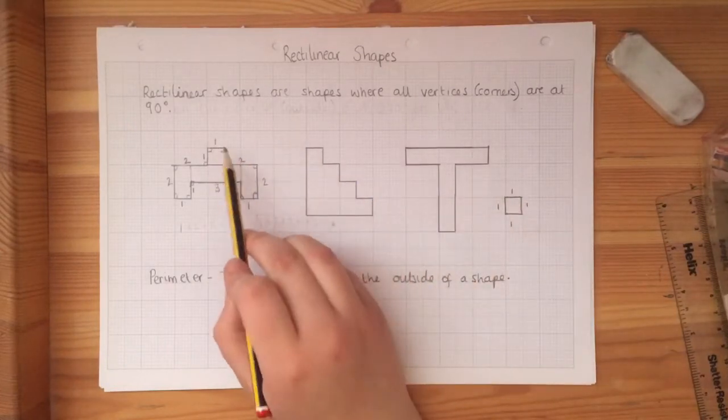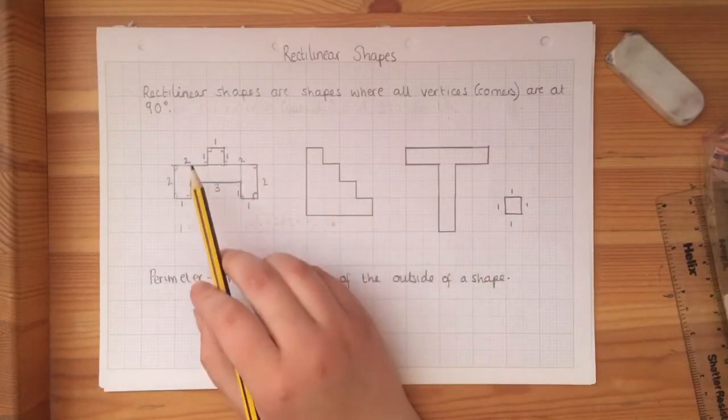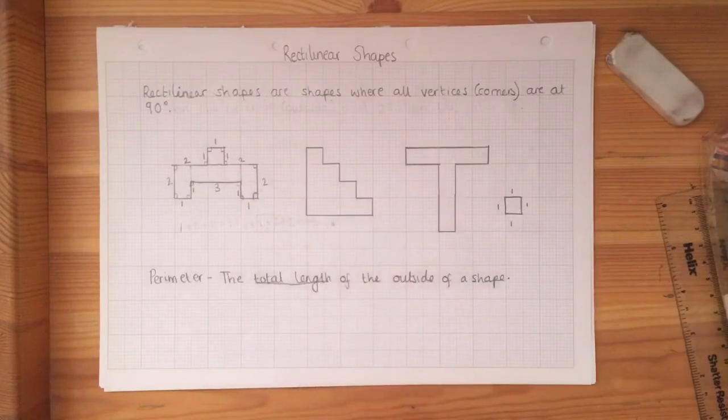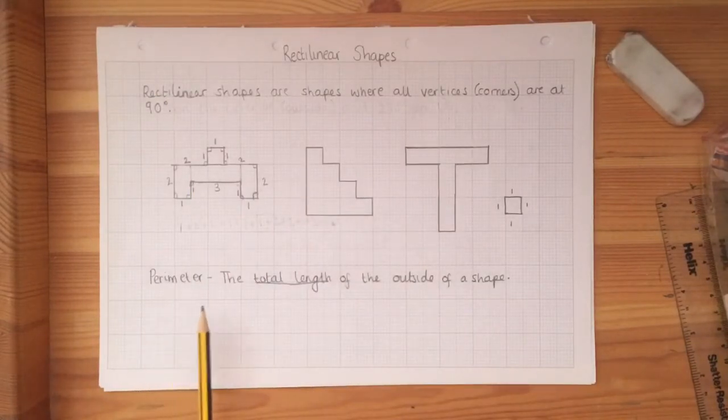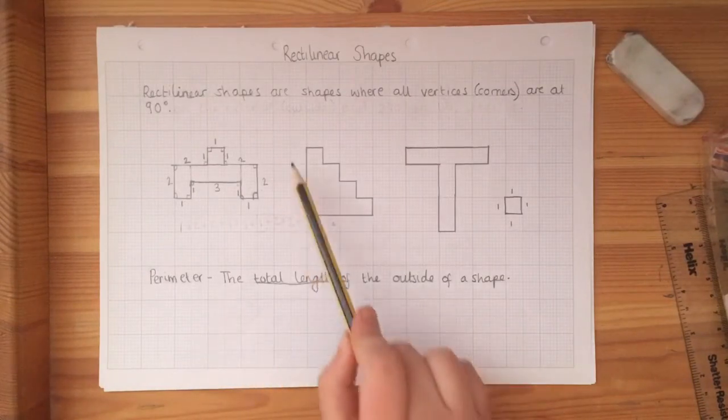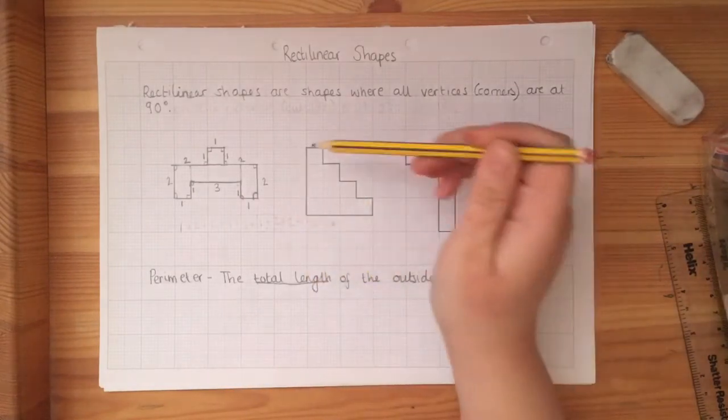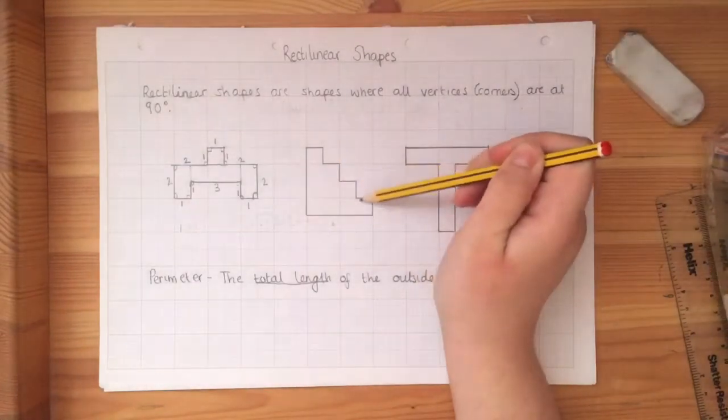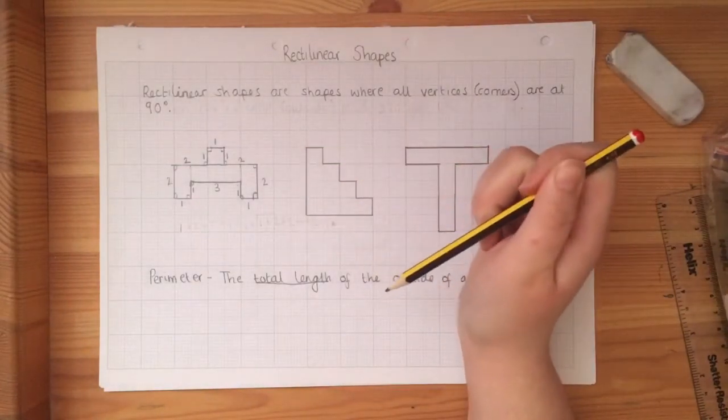I've also written some numbers around the outside. Some of you may have guessed why, but that's because we're going to be looking at the perimeter of the shape. The perimeter is the total length of the outside of the shape, so it's all the way around, as if I had to walk down each line, I want to know how long it is.